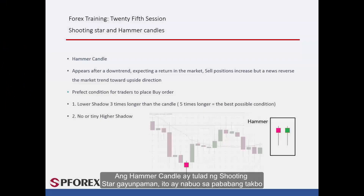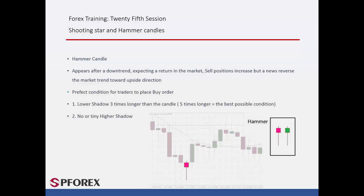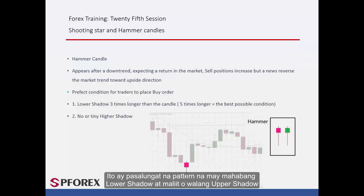The Hammer candle is similar to the Shooting Star; however, it is formed on a downward trend. It is a reversal pattern that has a long lower shadow and tiny or no upper shadow.